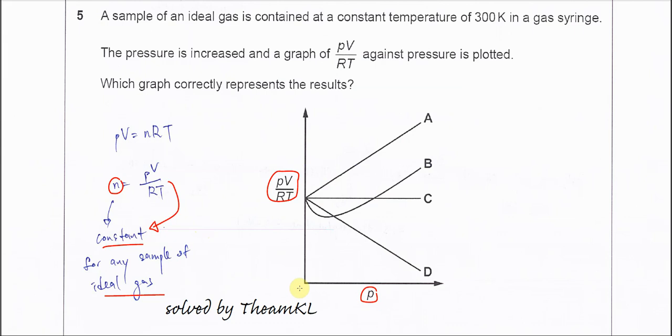For this graph, it means at any pressure, the moles or this PV over RT is going to be the same because it's always a constant. So the answer is C.